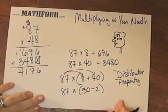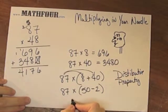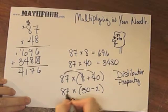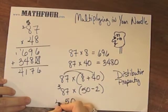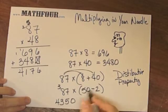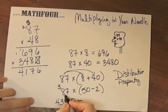Well, what's 87 times 50? Well, that's not easy, but it's not that terrible. You have a 0 and then 5 times 7 is 35. 5 times 8 is 40 plus 3 is 4350 minus 2 times 87, which is,